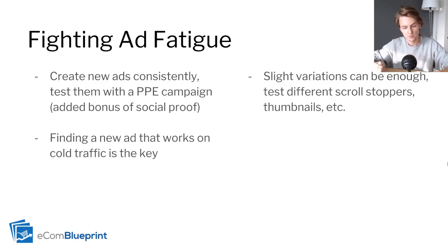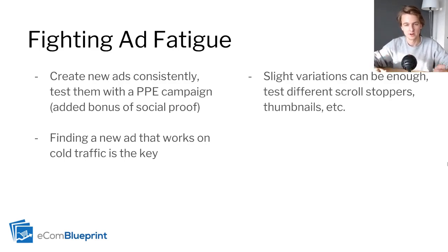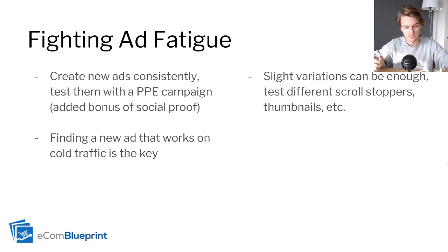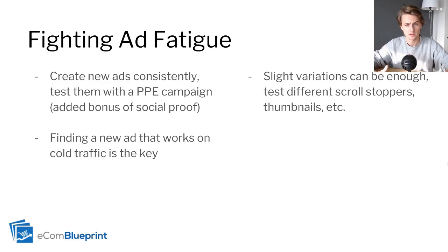Finding a new ad that works on cold traffic is obviously the goal. When you create a lot of new variations of your ads, most of them will work really well for retargeting. That's why my retargeting audiences have a lot of ads in them. If the PPE campaign shows decent results, I'll duplicate that creative into my retargeting ad sets. The key is finding something that works on cold traffic. Slight variations can really be enough to fight ad fatigue — sometimes all you need is to change the scroll stopper. In the case of FlexPosture, that's all it took.